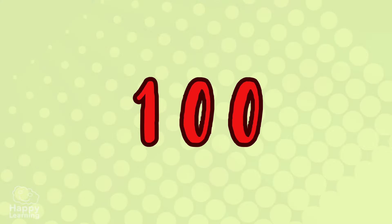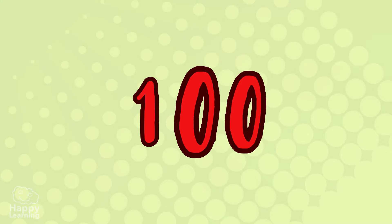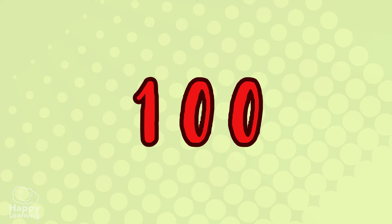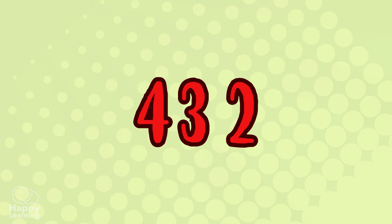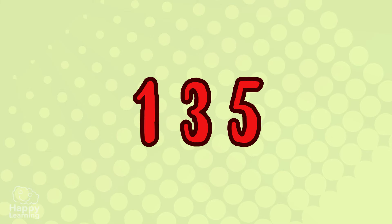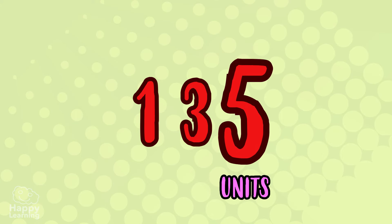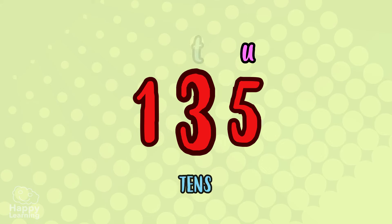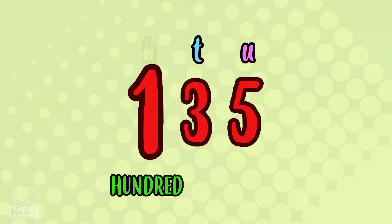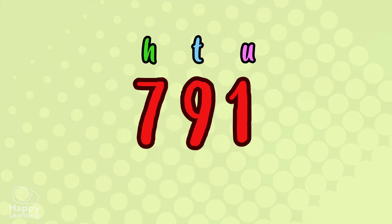The number one hundred has three digits. The hundreds are written in the third position, starting from the right. For example, let's write the number one hundred and thirty-five, which is equivalent to five units, three tens, and one hundred.